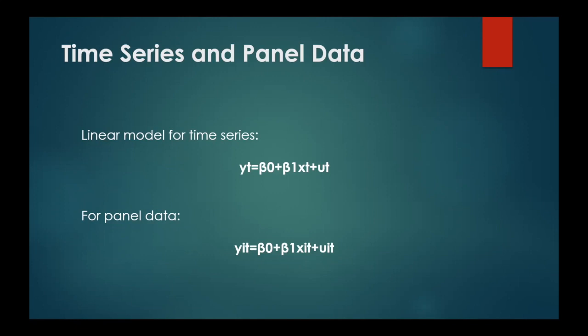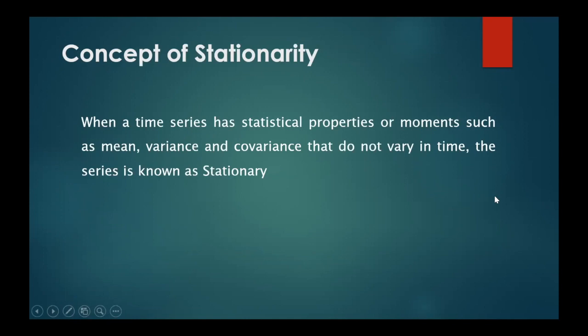Before moving further, let's understand what stationarity is. When the statistical properties such as mean, variance, and covariance of the distribution are constant over time, the time series is said to be stationary. In other words, when the series lacks a trend, it is known as a stationary series.